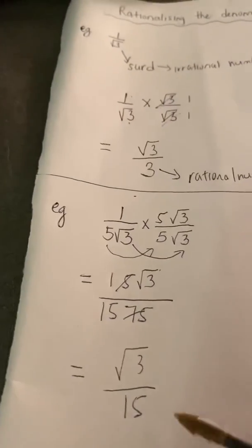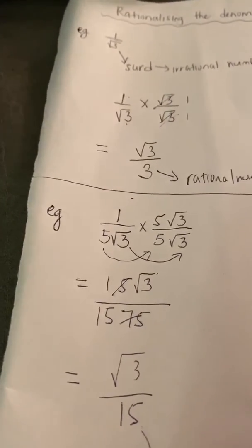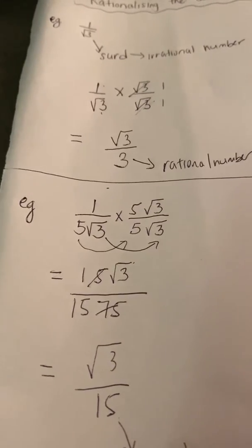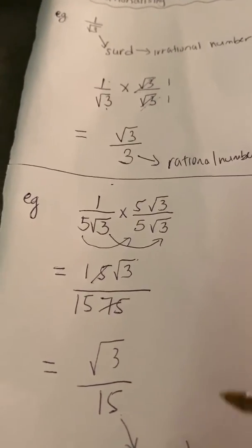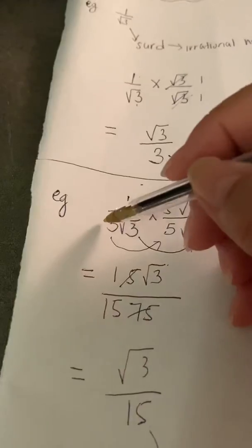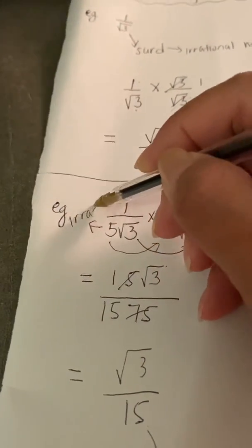As you can see, the denominator is 15, which is now a rational number, as opposed to 5 root 3, which is an irrational number to start with.